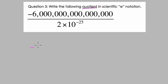So this numerator is just negative six times ten to the, let's see, one, two, three, four, five groups of three, or fifteenth, divided by two times ten to the negative twenty-fifth.